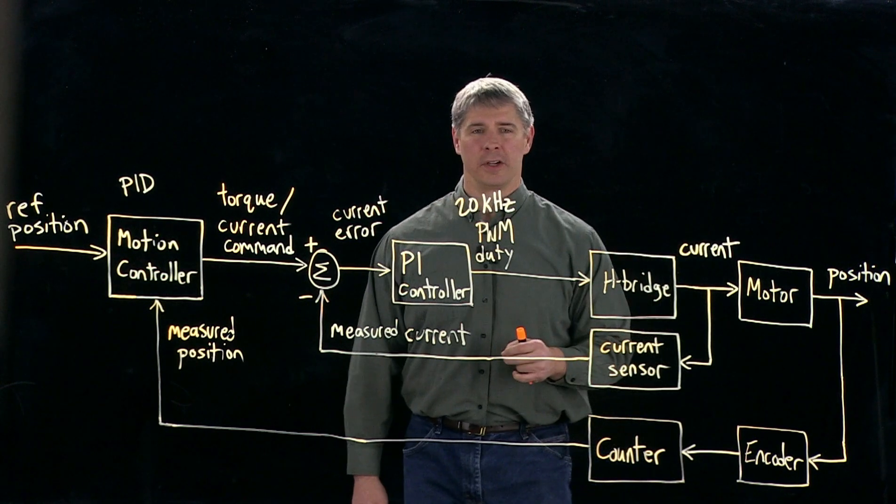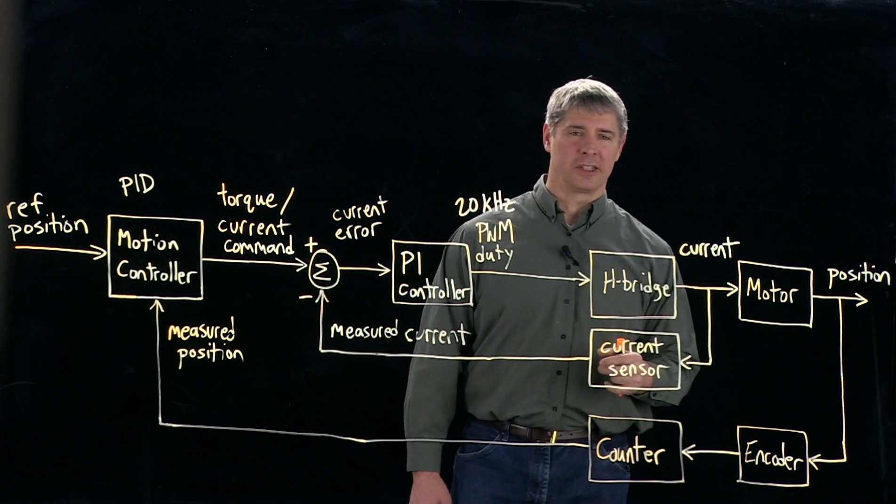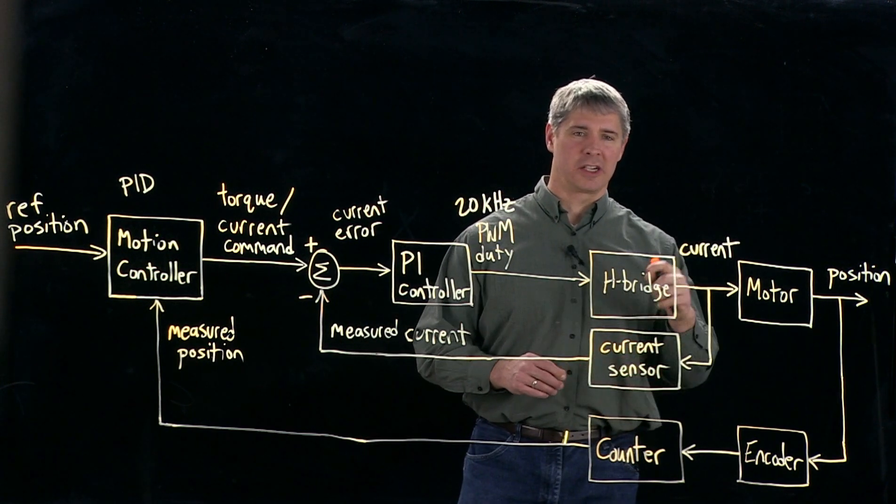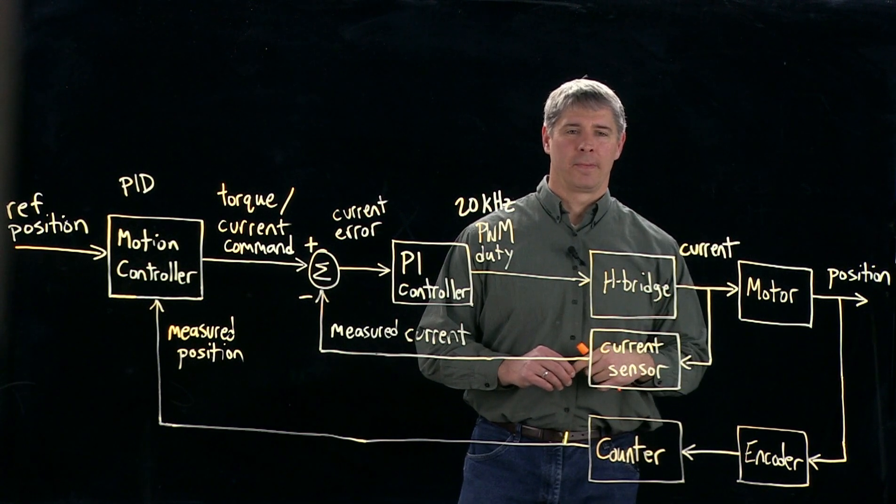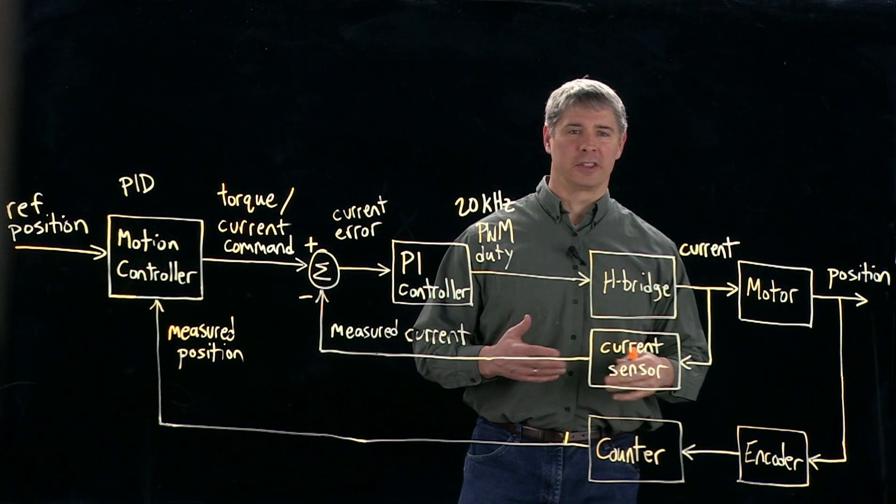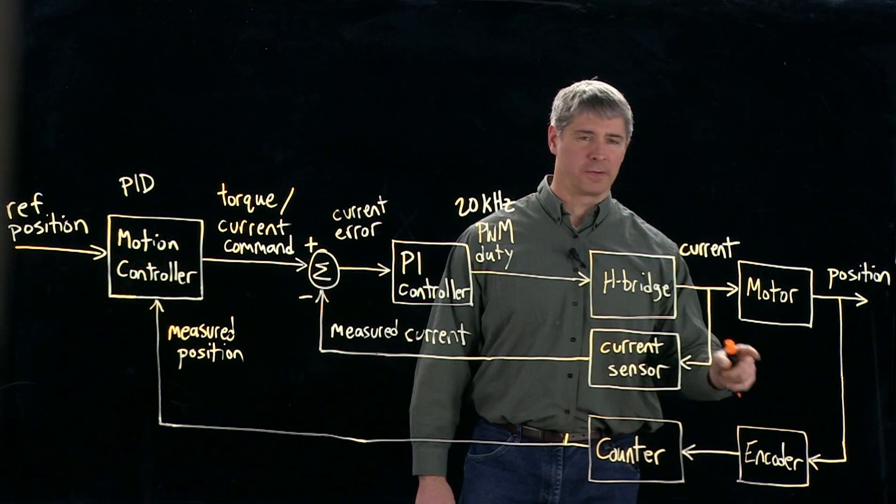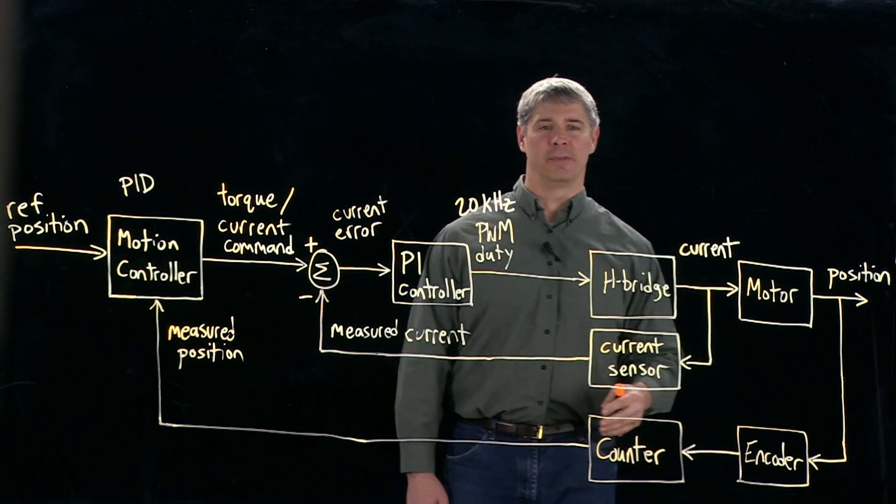And because it's all electronics, the time scale for it is much faster. In other words, the time constants associated with changing currents through a motor is much lower. It's a much faster time scale than it is for motion control where we have physical elements involved.